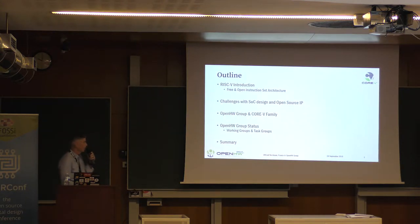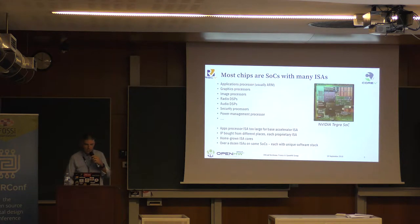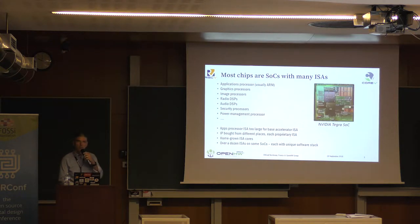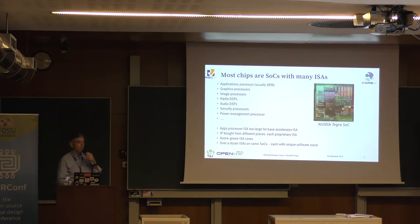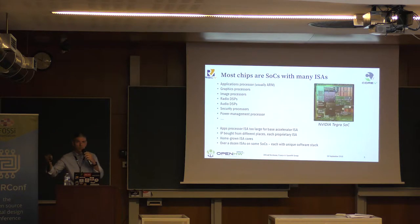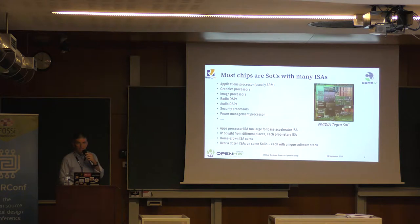This is a familiar slide I've used many times when giving RISC-V talks. Any modern SoC today — not just a Tiger SoC from NVIDIA — has dozens and dozens of cores, quite often upwards of half a dozen or more completely different ISAs on those cores. Many of the cores aren't exposed through the API to the user; they're completely embedded with their own software stack that needs to be supported. To be honest, it's a bit of an engineering nightmare.